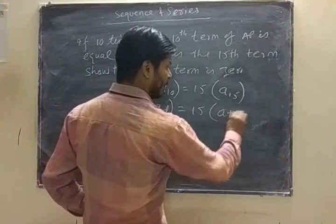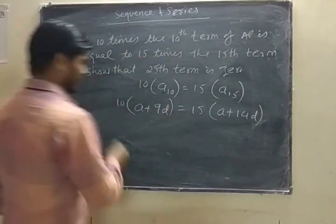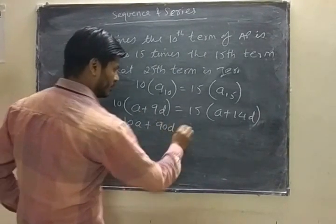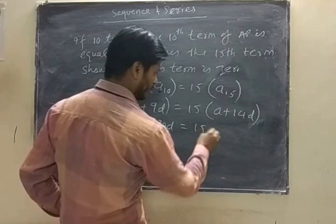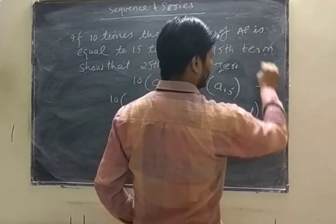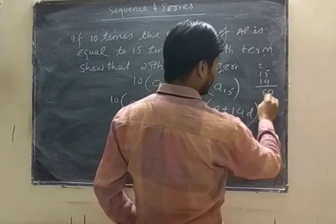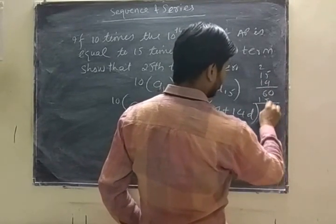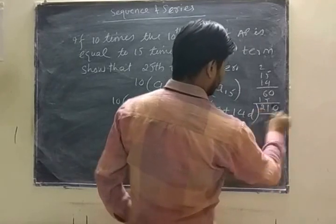Similarly, a plus 15 minus 1, 14d. Multiply it, what is 15 into 14? 5, 4 are 20, 6, 5, and 1, 4, 4, 5, 0, 11, 4, 2, 10.